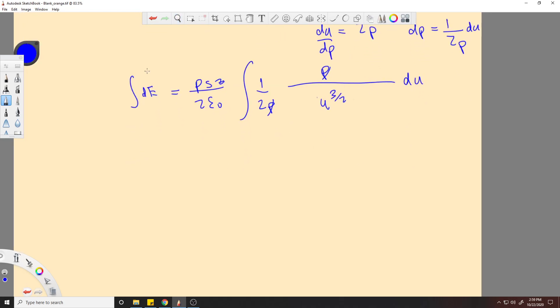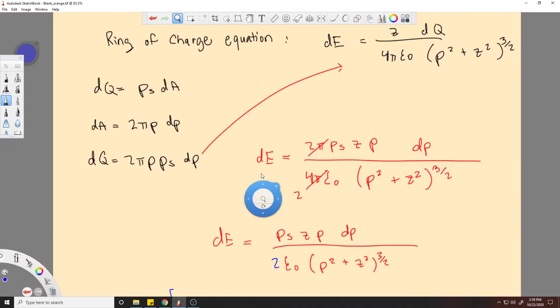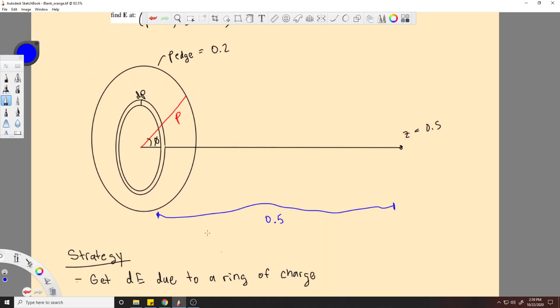Okay, so now this is an integral. I guess technically it would be from 0 to whatever we're integrating from here to, which would be 0 to like rho, like the outside of the rho edge. We're integrating from here to here.